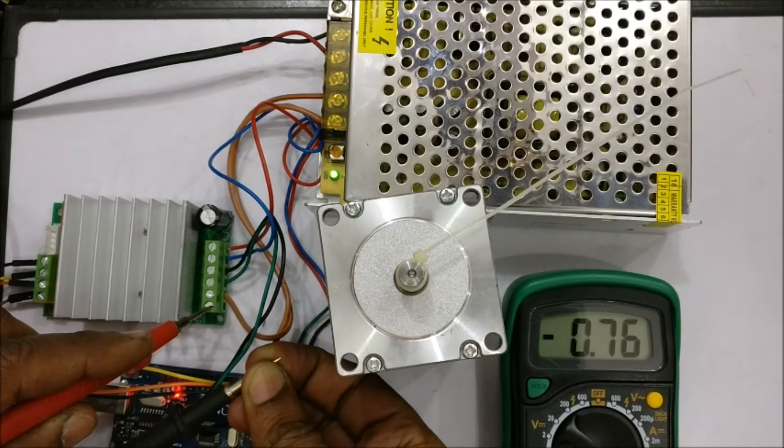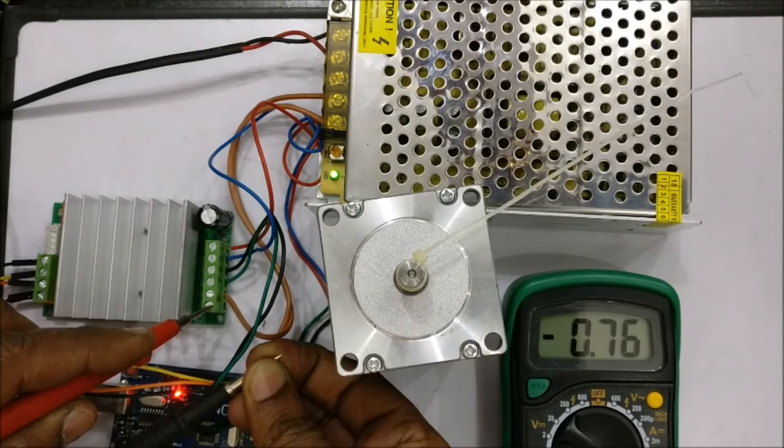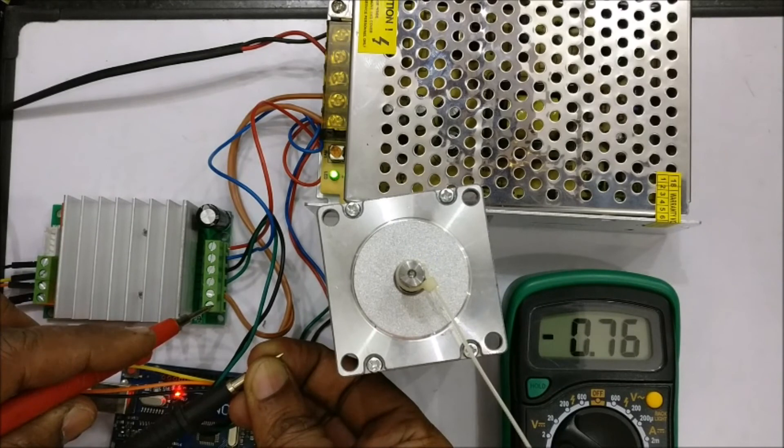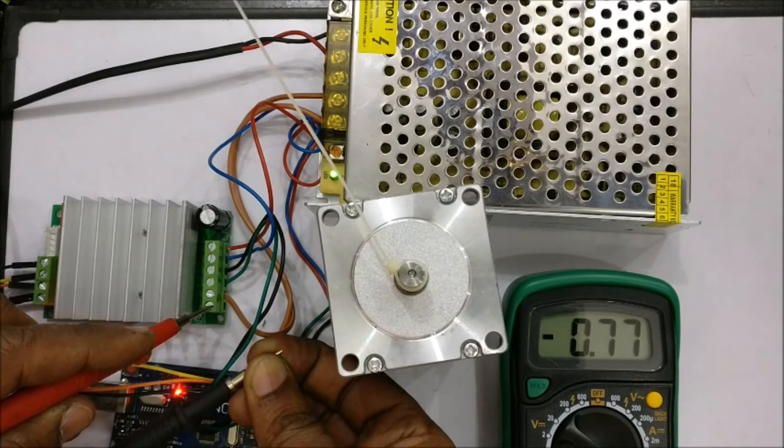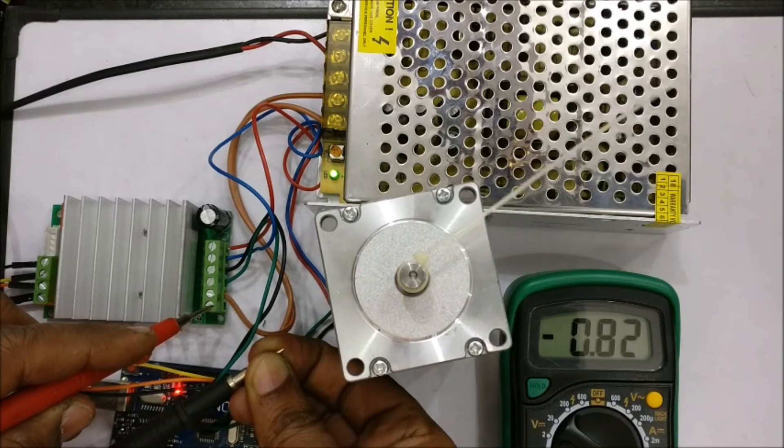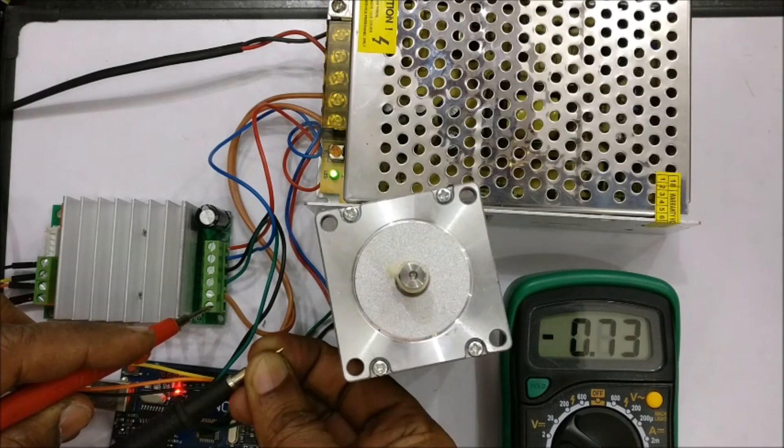Now you can see it withdraws 800 milliamps. It is very less compared to the capacity of the TB6600. So TB6600 is very effective stepper control drive. Thank you.